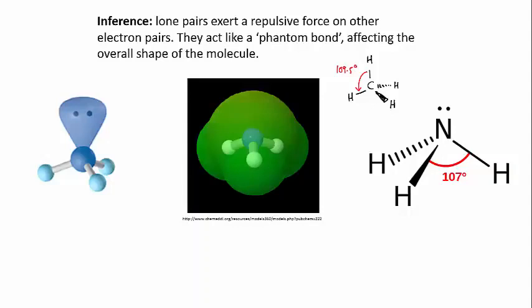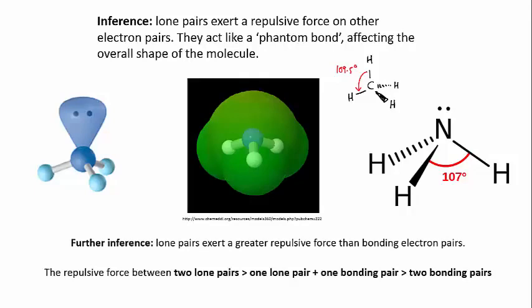What could cause this? Well, the inference that we make is that a lone pair exerts a greater repulsive force than a bonding pair. This means that if you had two lone pairs repelling each other, the force would be greater than if you had a lone pair versus a bond, and that would be greater than the force between two bonds. So here, the three NH bonds are pushed closer together by the lone pair, which makes the bond angle smaller.